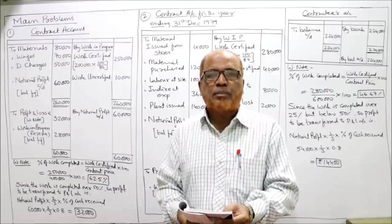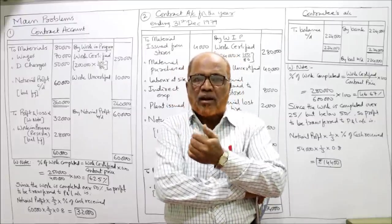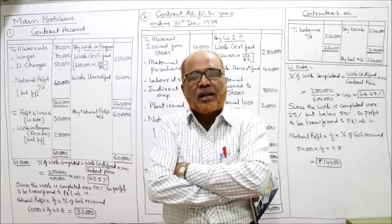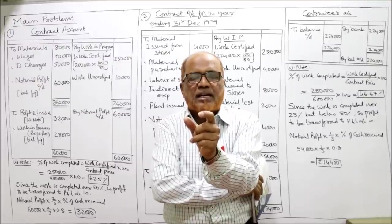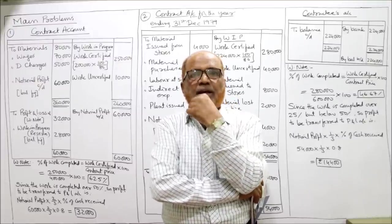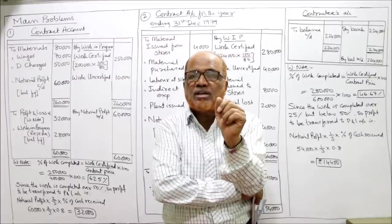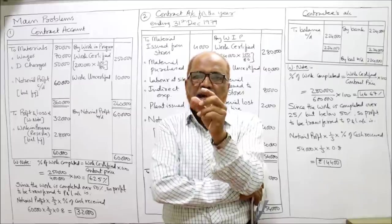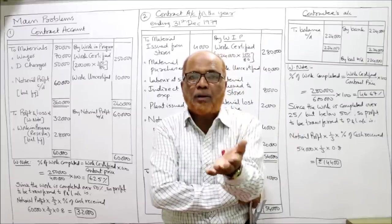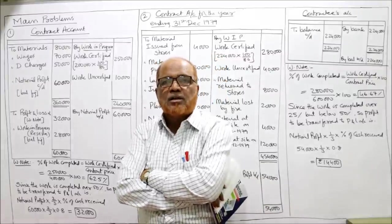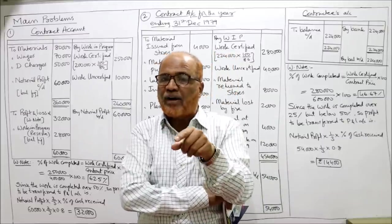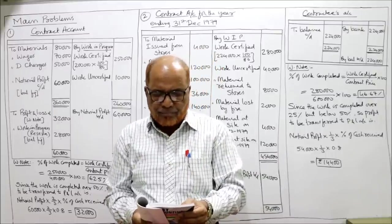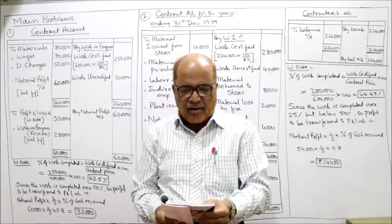2 lakh rupees have been received from the contractee, representing 80% of work certified. So I, as the contractor, received 2 lakh rupees, and this represents 80% of work certified. Work certified is not given in the problem — we have to calculate it using the formula: cash received × 100 ÷ 80%. We also need to calculate the profit to be transferred to the P&L account. Uncertified work in progress is 10,000.